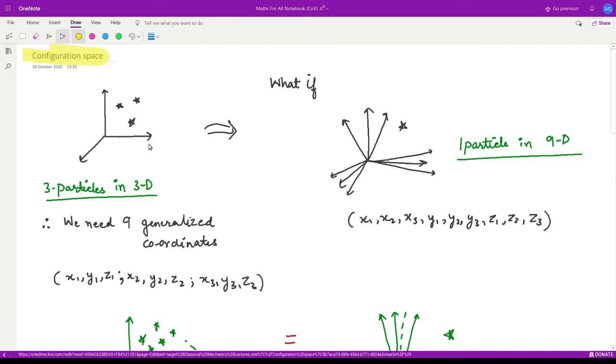So suppose a situation in which you have three dimensions and you have three particles in three dimensions. So for that you already know that you require nine generalized coordinates and what are those? So for the first particle it would be x1, y1, z1. For the second particle it would be x2, y2, z2. For the third particle it would be x3, y3 and z3.